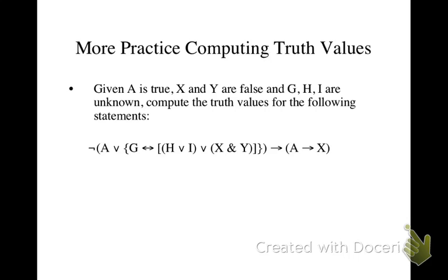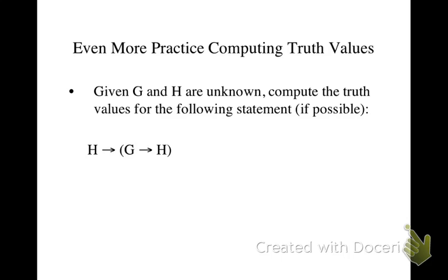What about this next example? We have everything is unknown. How can we possibly find the truth value of a formula where we don't know the truth values of any of the parts? Well, it turns out sometimes we can do it still.